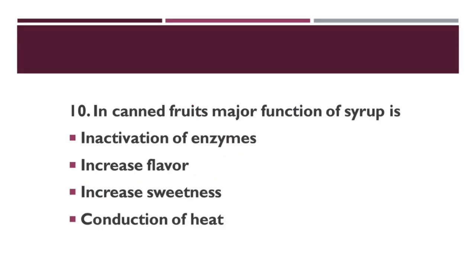In canned fruits, the major function of syrup is — Option A: inactivation of enzymes. Option B: increased flavor. Option C: increased sweetness. Option D: conduction of heat. Correct answer is Option D: conduction of heat. Syrup is added to canned fruits primarily for heat conduction, though sweetness and flavor are also maintained.